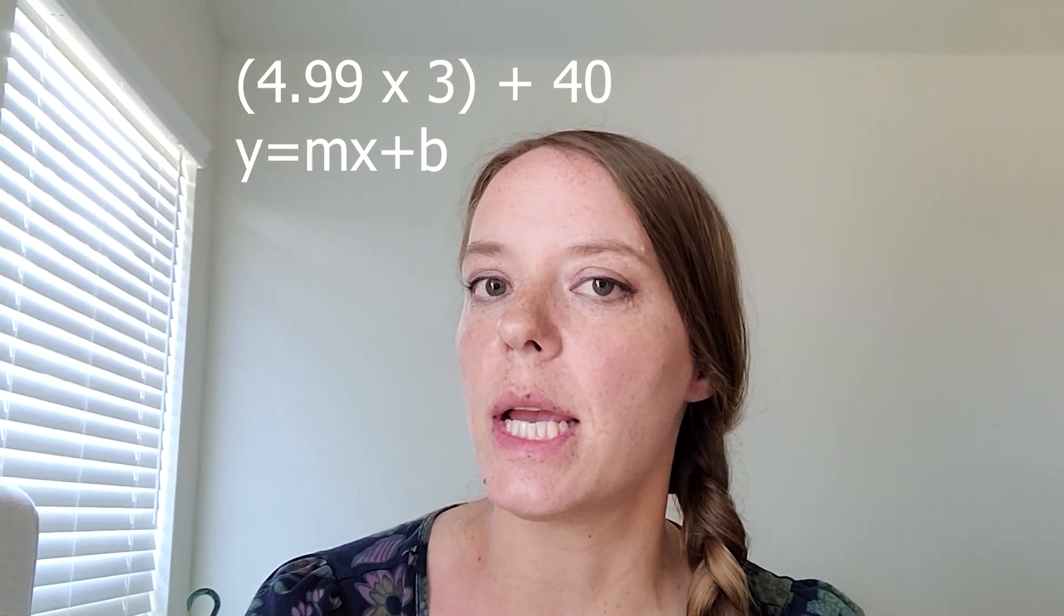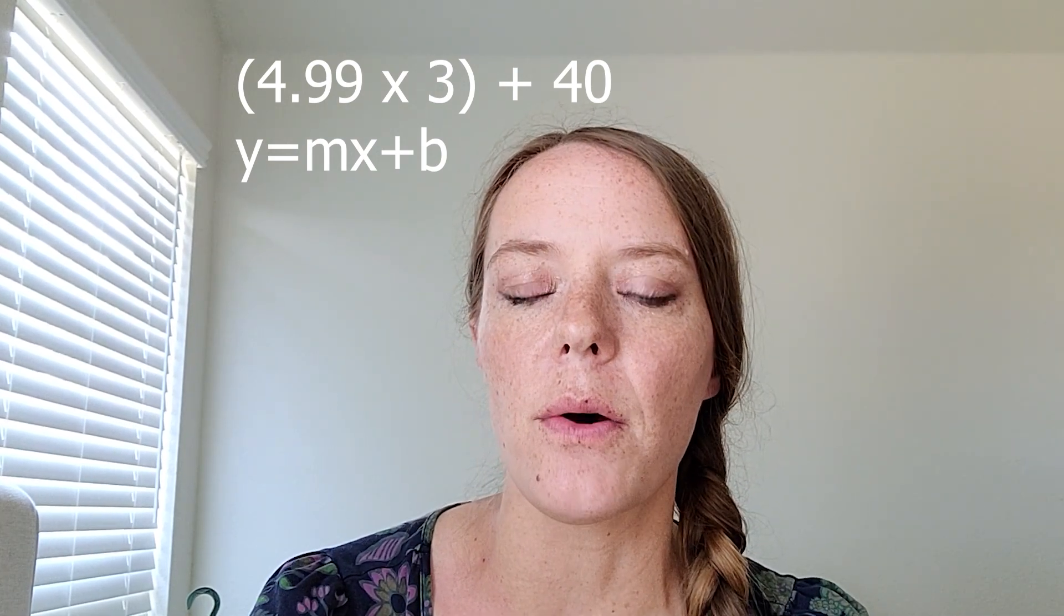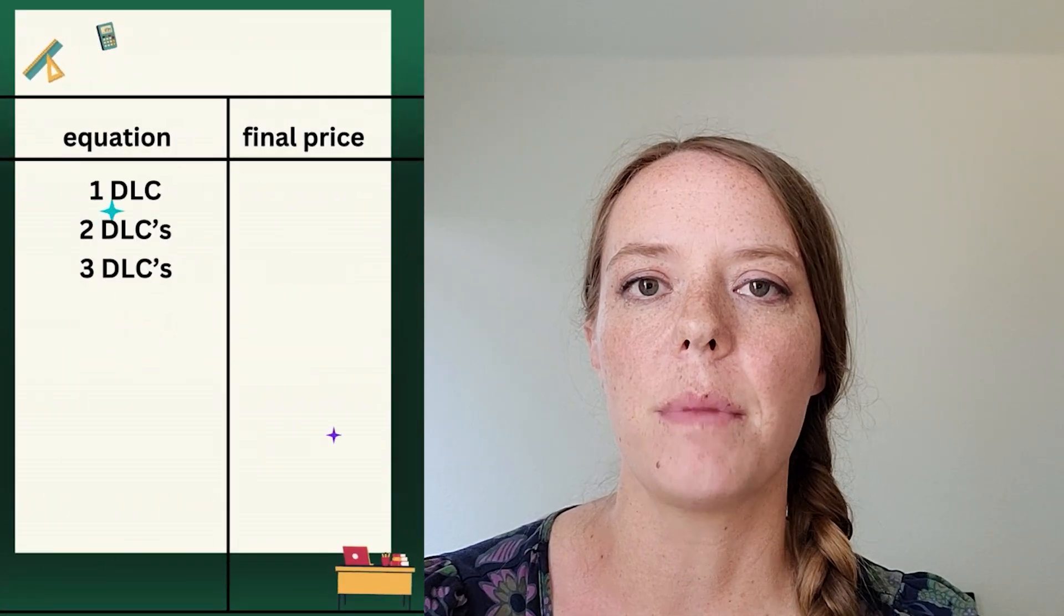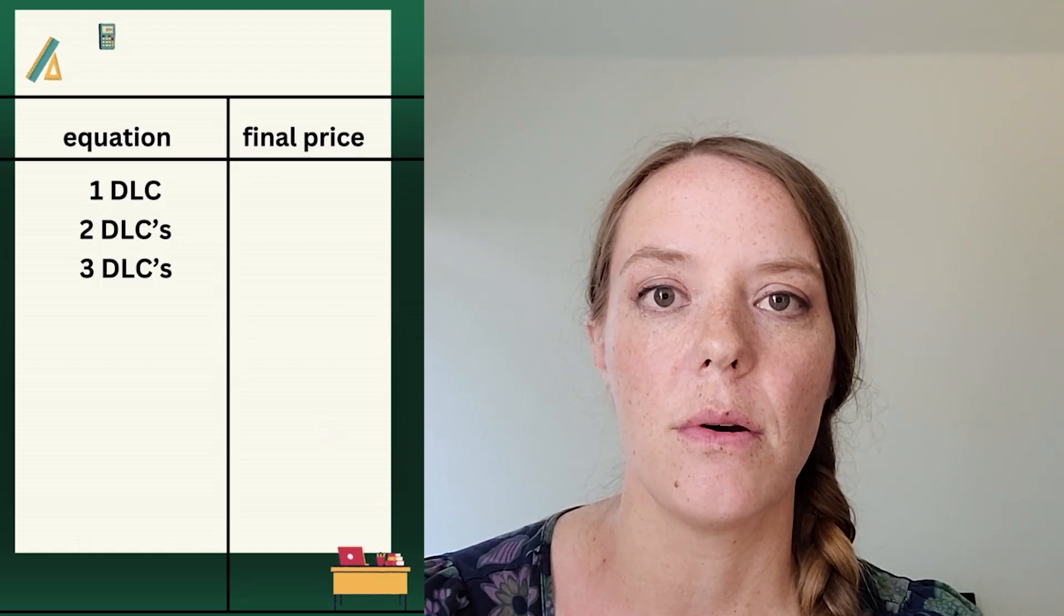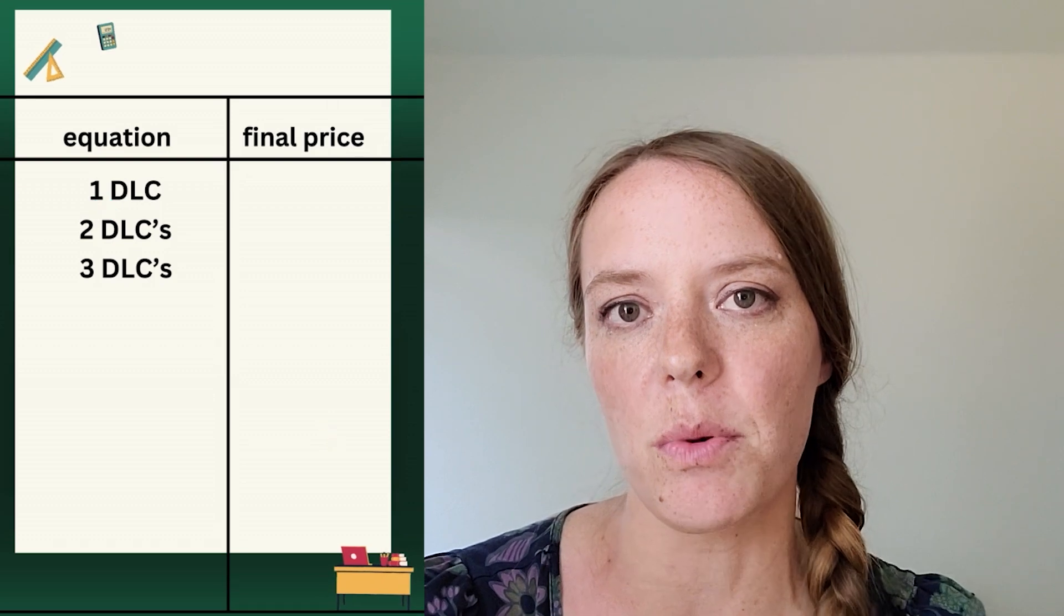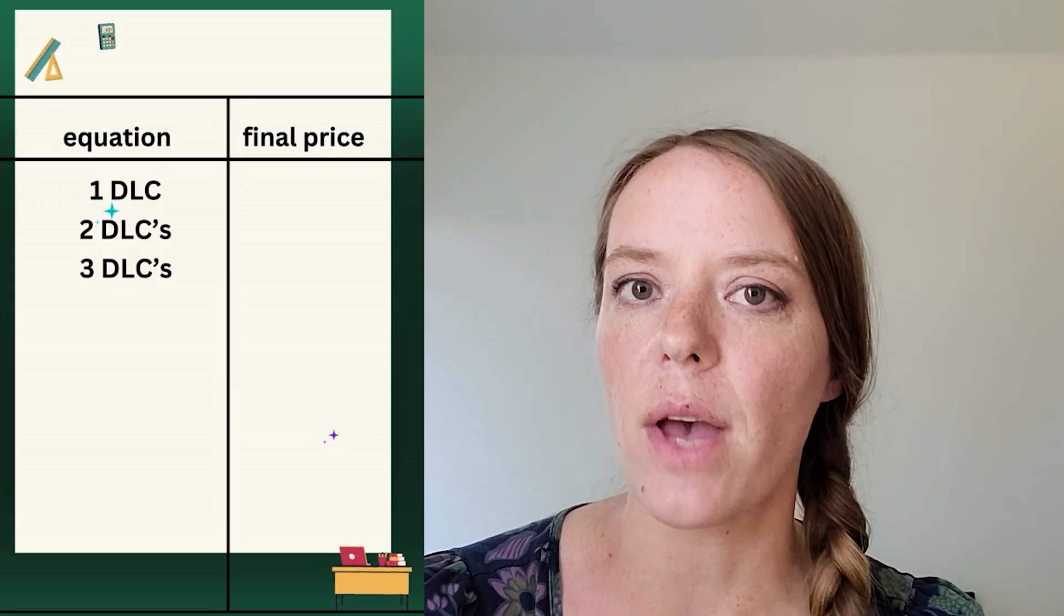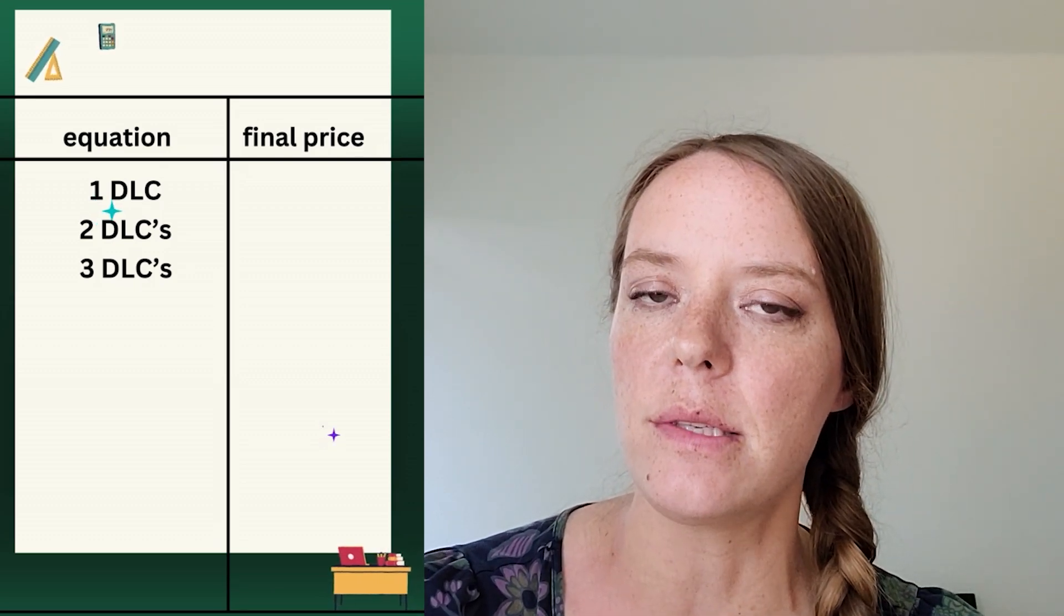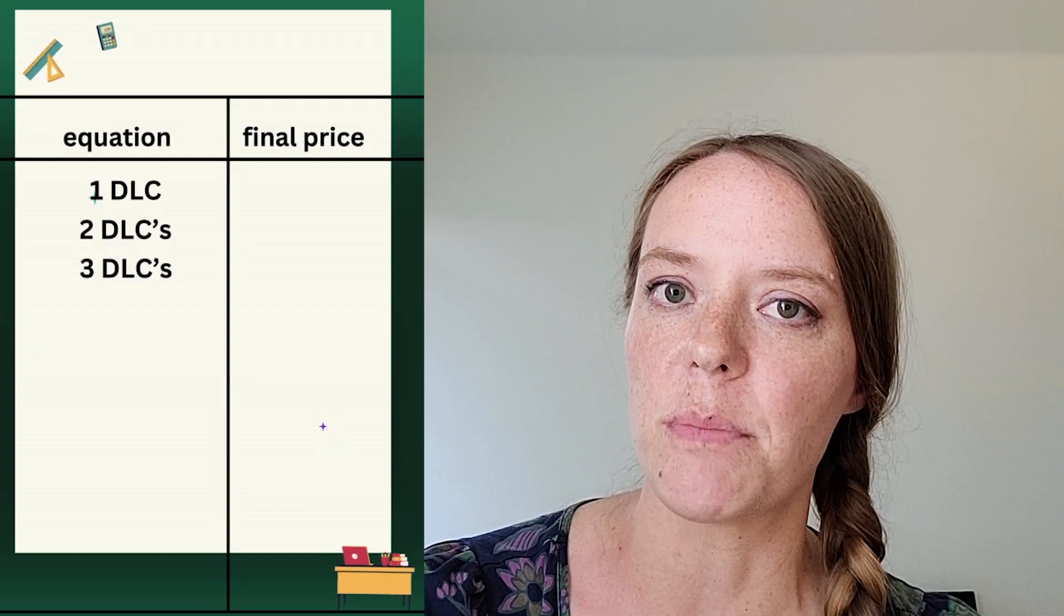Okay, now we're going to try to take the same scenario, but we're going to see what it would cost if I got a different amount of DLCs. So, you know, we don't have to just stick with three. Let's figure out this table. So what if I get one DLC or two? So I want you to try to make an equation that goes with that amount and then find out that final price that it's going to cost me.